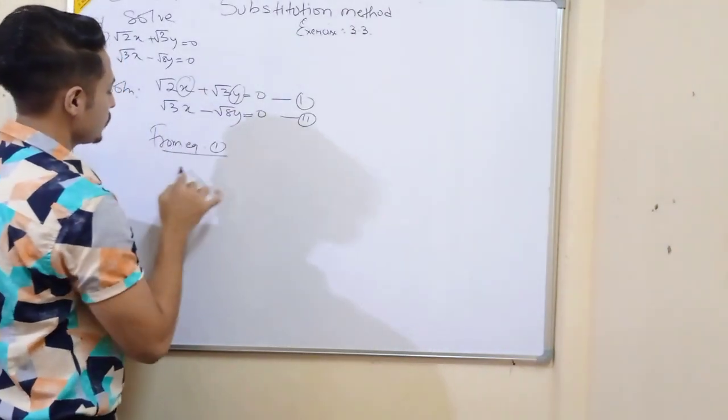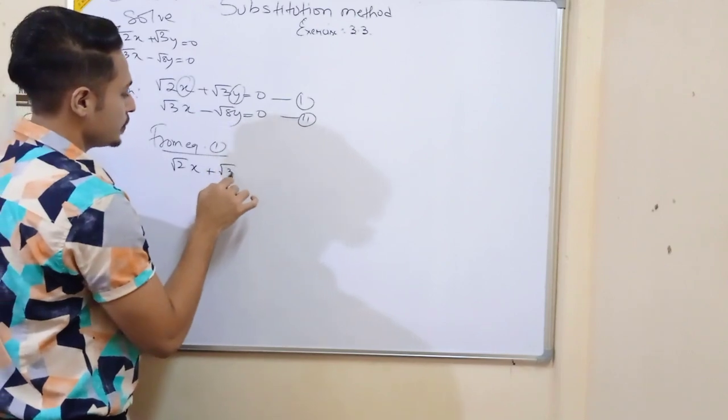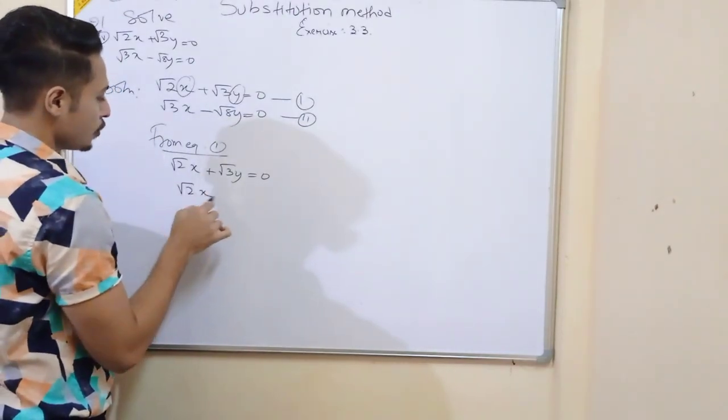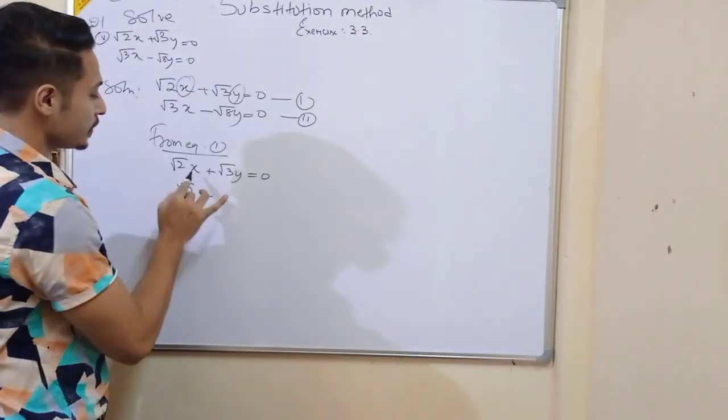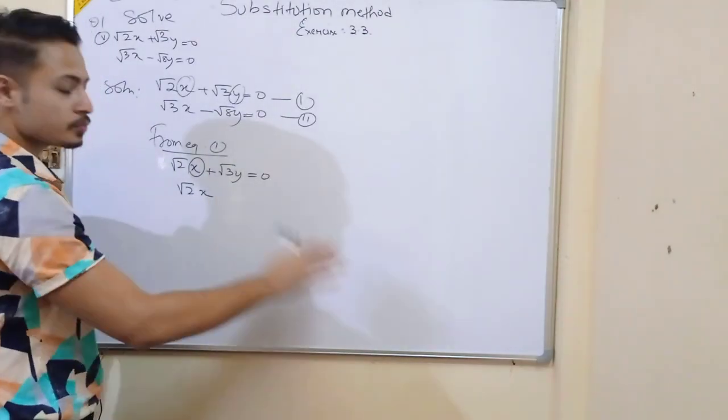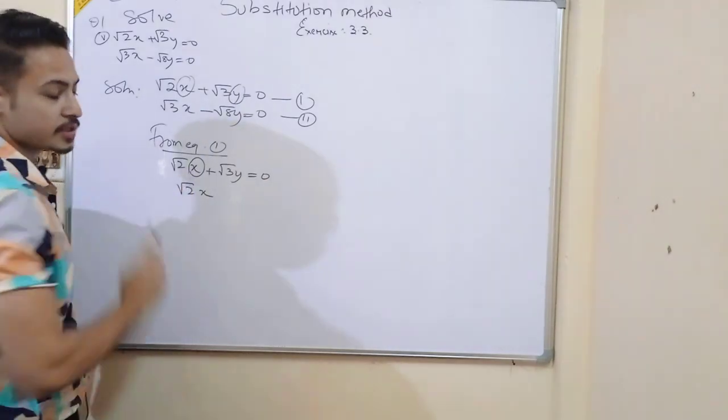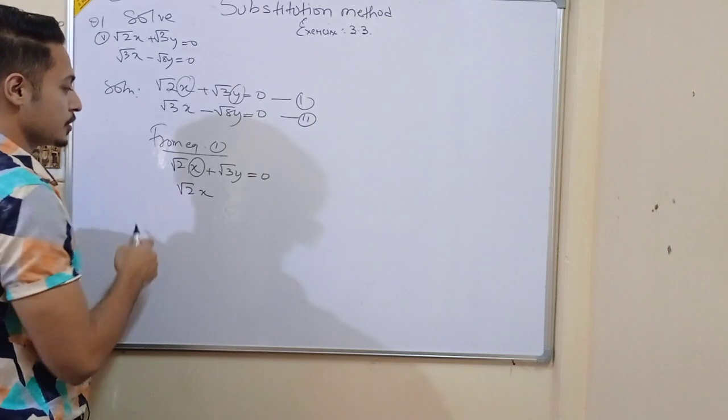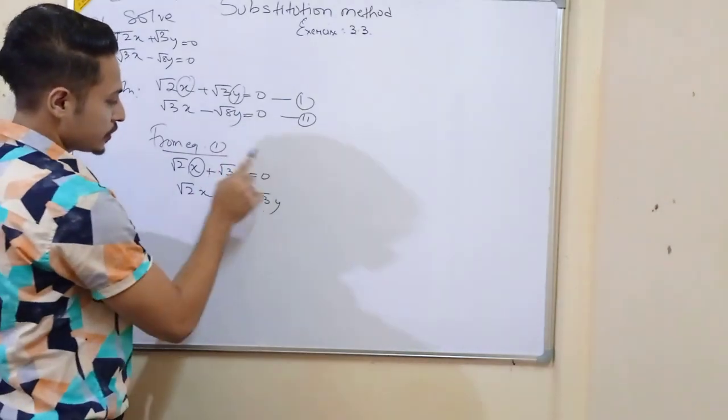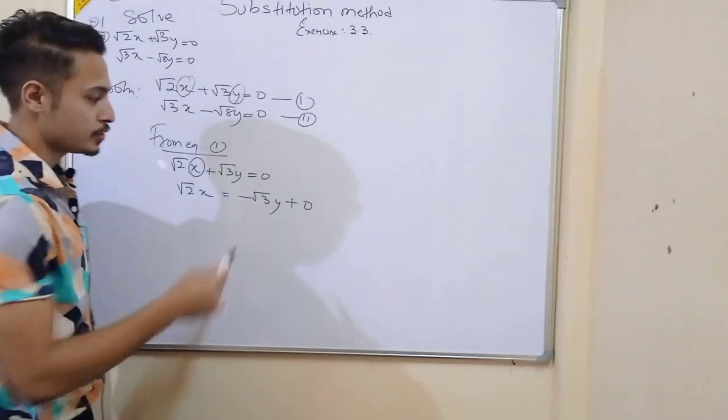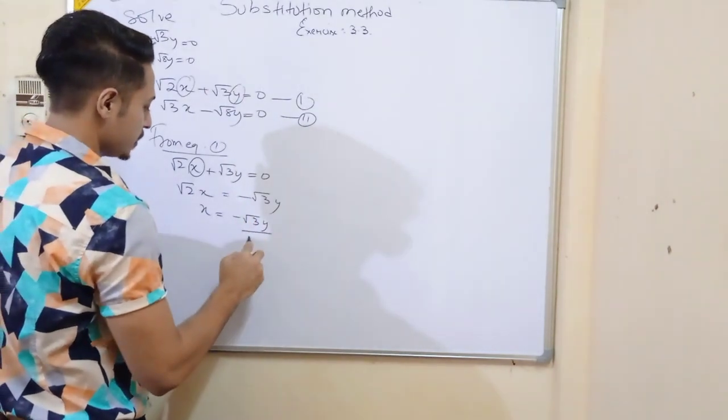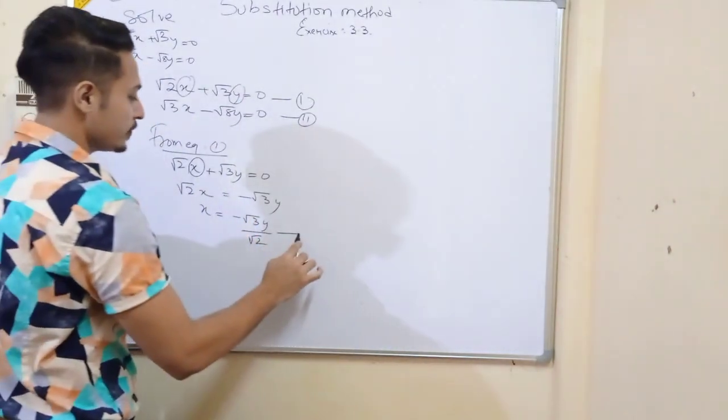So from equation one, we have x value. We need to find the x value. Let's transfer the terms. We'll keep the x variable, so we transfer other terms. Plus root 3y will become minus root 3y when transferred. So x equals minus root 3y by root 2. So this is equation 3.